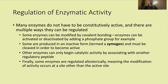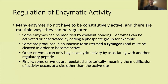Many enzymes do not have to be constitutively active, and there are multiple ways they can be regulated. Some enzymes can be modified by covalent bonding — for example, activated or deactivated by adding a phosphate group. Some are produced in an inactive form called a zymogen and must be cleaved to become active. Other enzymes require association with a regulatory peptide to begin catalytic activity. Finally, some enzymes are regulated allosterically — modification occurs at a site other than the active site, and can be either inhibitory or excitatory.